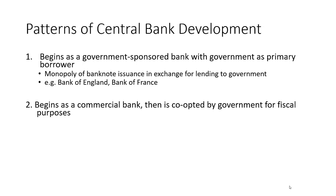Pattern two, which is also fairly common, is that the government takes over a pre-existing commercial bank and turns it into a central bank, often providing incentives for that bank to lend money on very easy terms to the government — the same purpose of fiscal helper, where the central bank commits to lend money to the government, buy government bonds, or ultimately monetize the government's debt. We saw this with some early central banks in Amsterdam and Sweden.